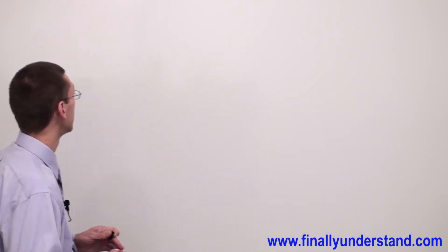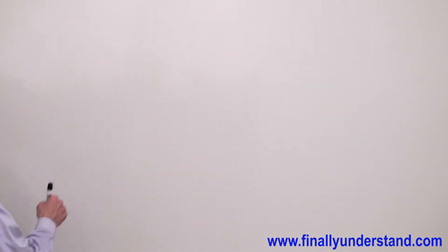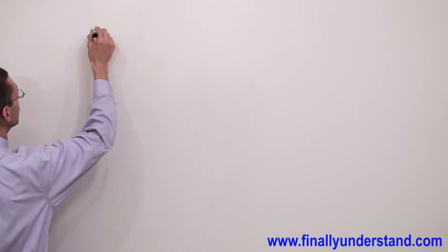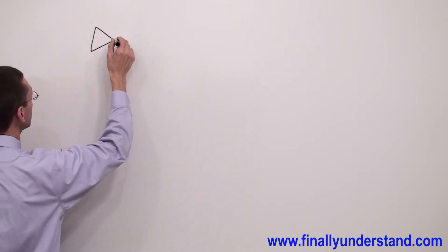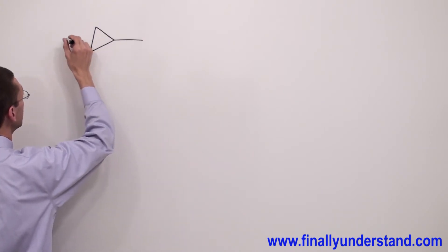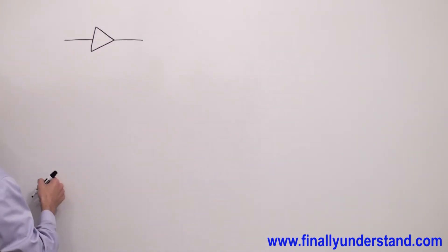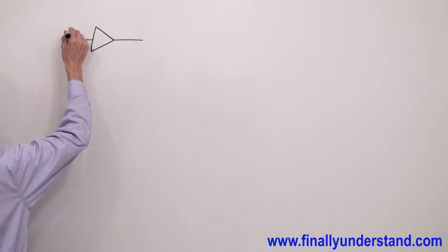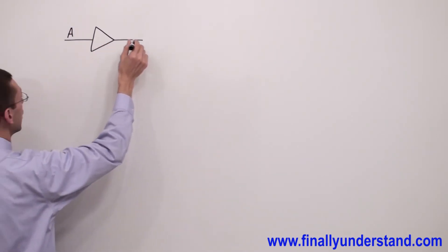The buffer is the gate which is going to simply work like an amplifier. In electronics, any time you want to represent an amplifier, you are supposed to draw a triangle. If it comes to a buffer, this also has the shape of a triangle. This is the distinctive shape symbol with input A and output X.